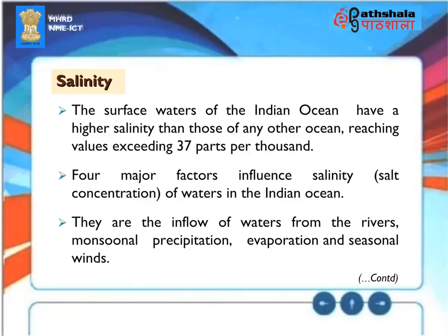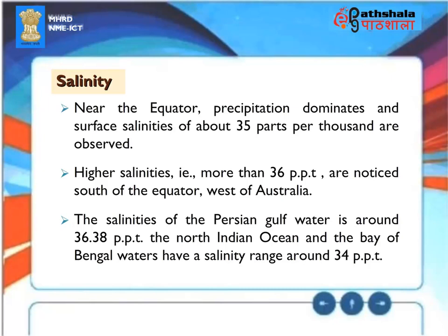Salinity. The surface waters of the Indian Ocean have a higher salinity than those of any other ocean, reaching values exceeding 37 parts per thousand. Four major factors influence salinity: inflow of river waters, monsoonal precipitation, evaporation, and seasonal winds. Near the equator, precipitation dominates and surface salinities of about 35 parts per thousand are observed. Higher salinities exceeding 36 parts per thousand are noticed south of the equator, west of Australia. The Persian Gulf water salinity is around 36.38 ppt; the North Indian Ocean and Bay of Bengal waters have a salinity range around 34 ppt.